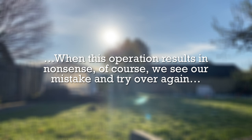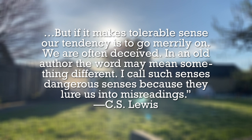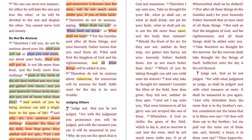Lewis says: when this operation results in nonsense — like 'flocks of cattle' or 'trees that he's given for meat' — we see our mistake if we're good readers and try again. But if it makes tolerable sense, our tendency is to go merrily on. We are often deceived — in an old author the word may mean something different. I challenge even the subtlest reader to remember everywhere the word 'meat' appears in the King James it means something we never use it to mean today. It's one thing to learn words you've never heard like 'besom' or 'chambering,' but to remember to watch out for words you use all the time — that's very hard.